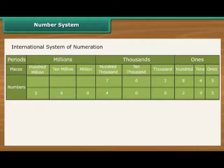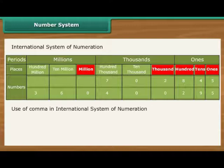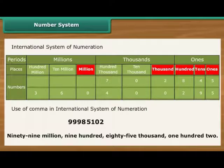In the international system of numeration, as it is being used, we have ones, tens, hundreds, thousands, and then millions. One million is a thousand thousands. Commas are used to mark thousands and millions. It comes after every three digits from the right. The first comma marks thousands and the next comma marks millions.